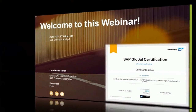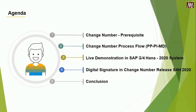Without further delay, let's have a quick look at the two-day agenda. Primarily, we are going to cover the change number and its entire facility. In the first section, we will cover the change number prerequisites. Next, we will cover the change number process flow. Third, we will demonstrate in the SAP S4HANA 2020 live system. Fourth, we will cross-check the digital signature approval policy applicable to the change number in the same system. Finally, we will conclude and find the conclusion.